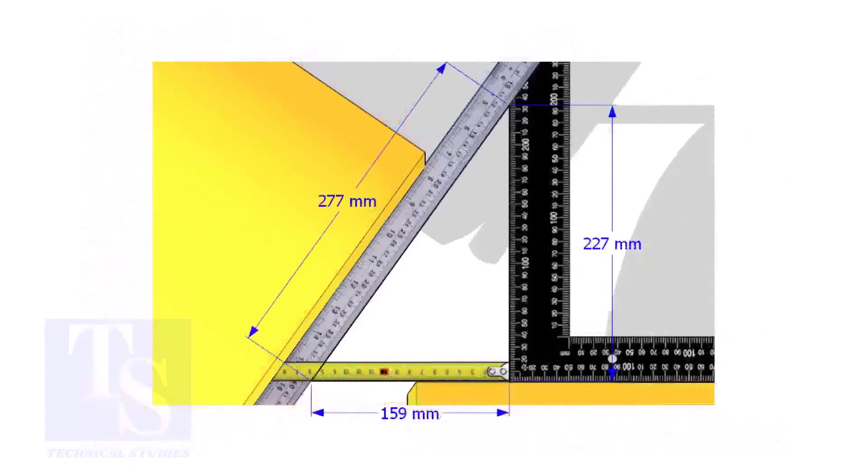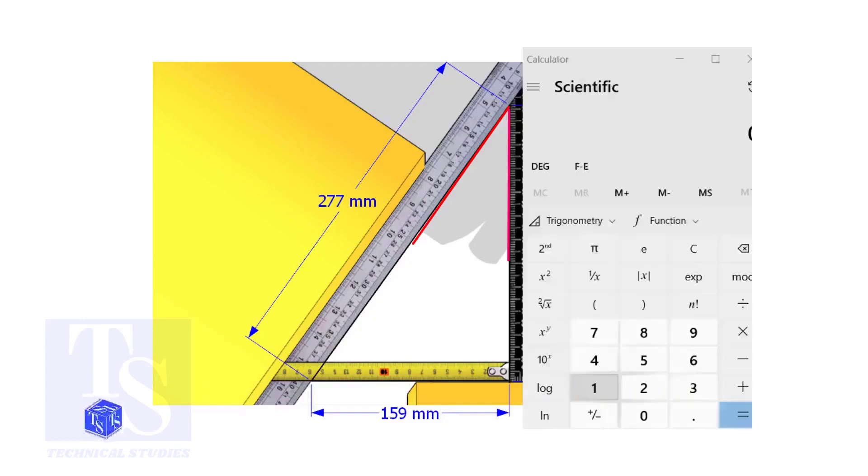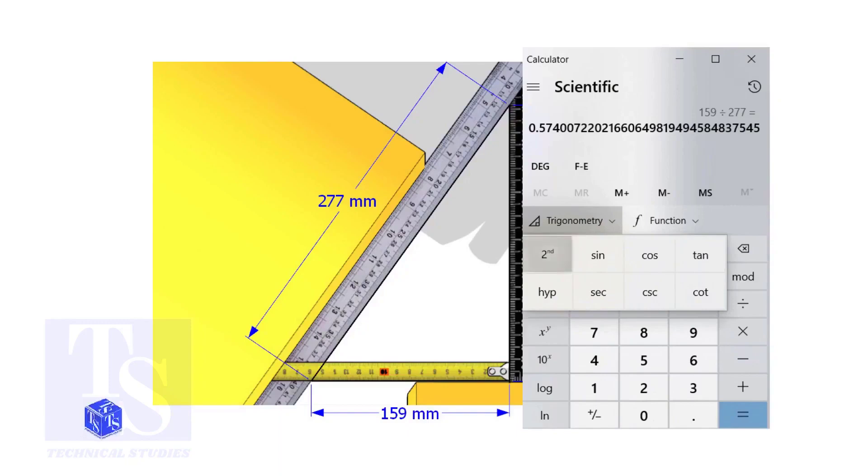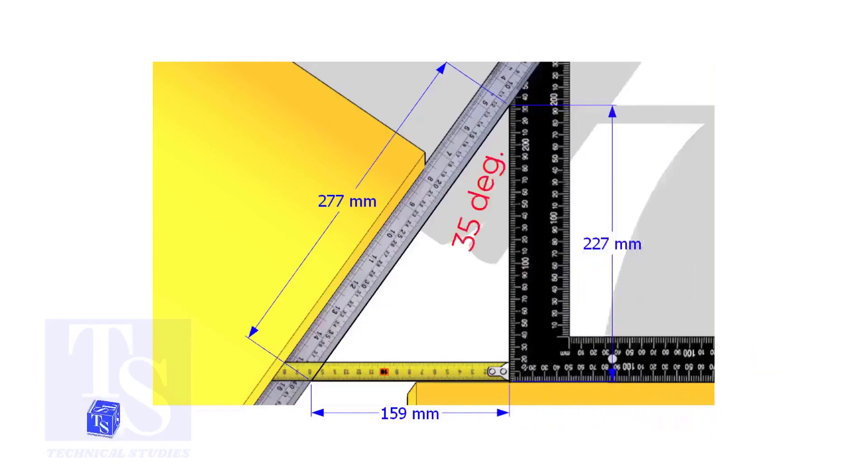Measure and note down the dimensions of the triangle. Assume that these are the dimensions. Let us calculate the including angle. If you apply the sine rule, the angle will be 159 divided by 277, shift sine. So the answer is 35 degrees.